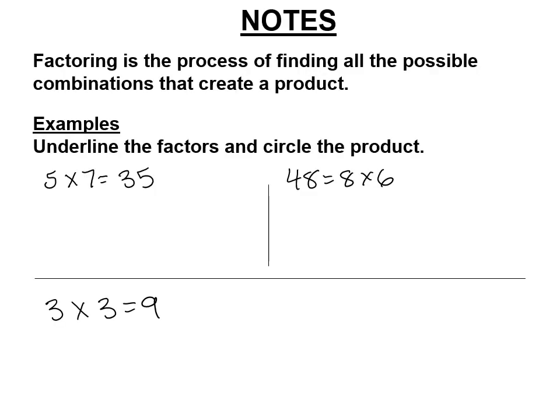All right, so I want you to underline the factors in these problems and circle the product. Well, 5 and 7 are factors, and when you multiply two factors, the answer is called a product. The product is the answer to a multiplication problem, just like the sum is the answer to an addition problem. So 8 and 6 are the factors, 48 is the product. 3 is the factor, it's 3 times 3, and 9 is the product.